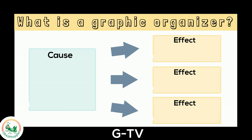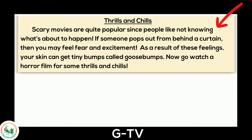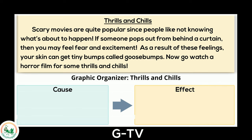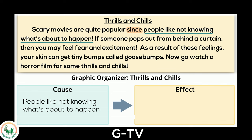Let's look again at the text Thrills and Chills and organize the information we underlined by completing a graphic organizer. Let's look at the information connected to the signal word 'since.' The cause — or why something happened — is people like not knowing what's about to happen. We will write that here. The effect of this is that scary movies are popular. We will write that here.